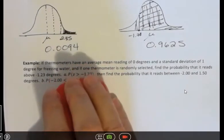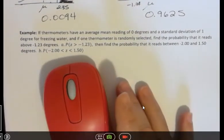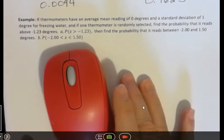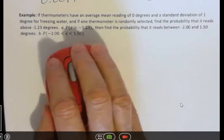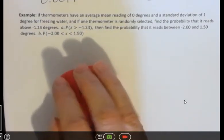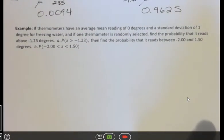Here's the problem I'm going to start with. If thermometers have an average mean reading of zero degrees and a standard deviation of one degree for freezing water, and if one thermometer is randomly selected, find the probability that it reads above negative 1.23 degrees. Then find the probability that it reads between negative 2 and 1.5 degrees.